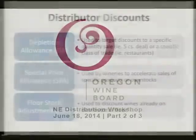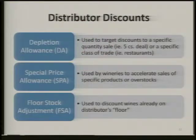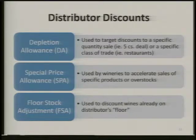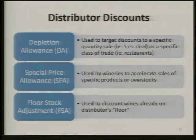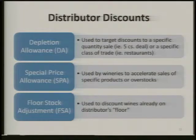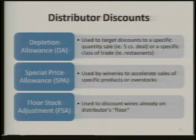I wanted to go over what to expect from distributors — I call these distributor discounts. The first one is a depletion allowance. A depletion allowance is used to discount to a specific quantity sale, like a five-case deal, or a specific class of trade, like restaurants.